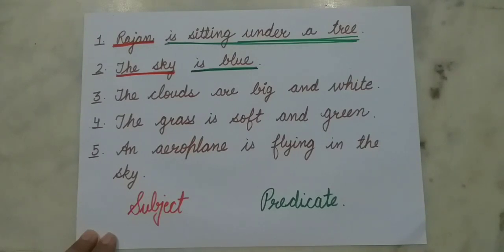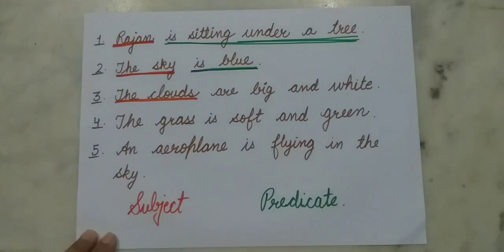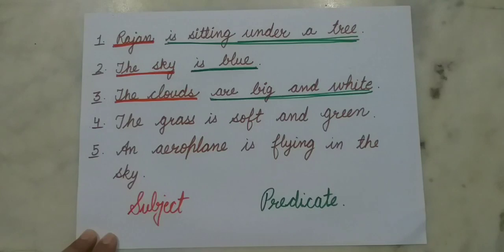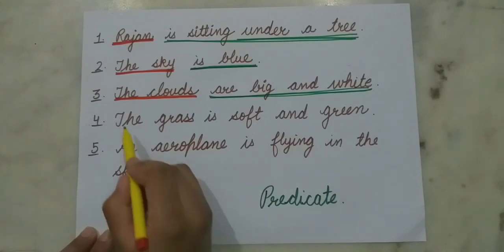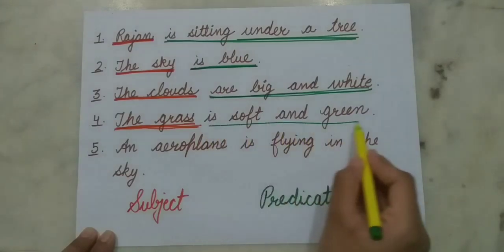The third sentence says: 'The clouds are big and white.' We are talking about the clouds, so 'the clouds' is our subject. Whereas 'are big and white' — what is told about the clouds is that they are big and white — so this part is the predicate. Next: 'The grass is soft and green.' We are talking about the grass, so the grass is our subject, and 'is soft and green' is our predicate.